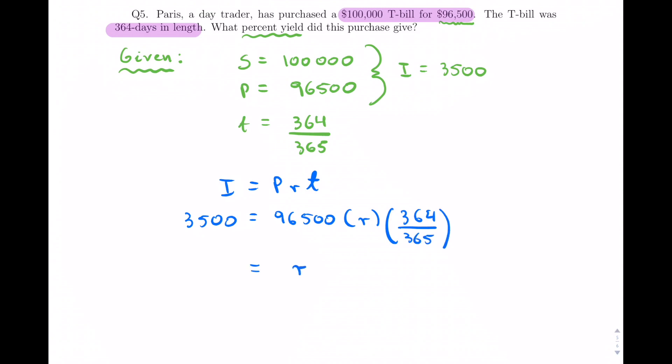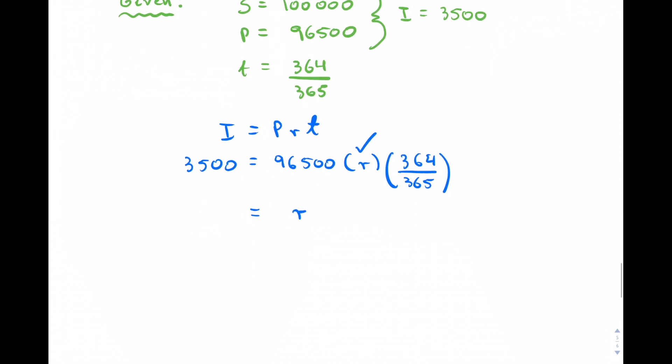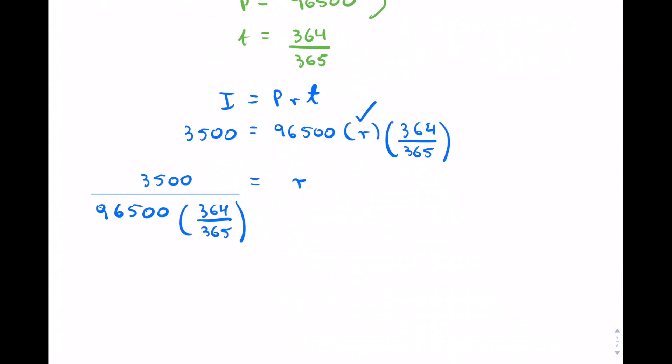Okay, so if you rearrange this, because we want to solve for R, okay, so you're going to get, divided by 96,500, 364 over 365. Okay, so just be careful how you set it up.